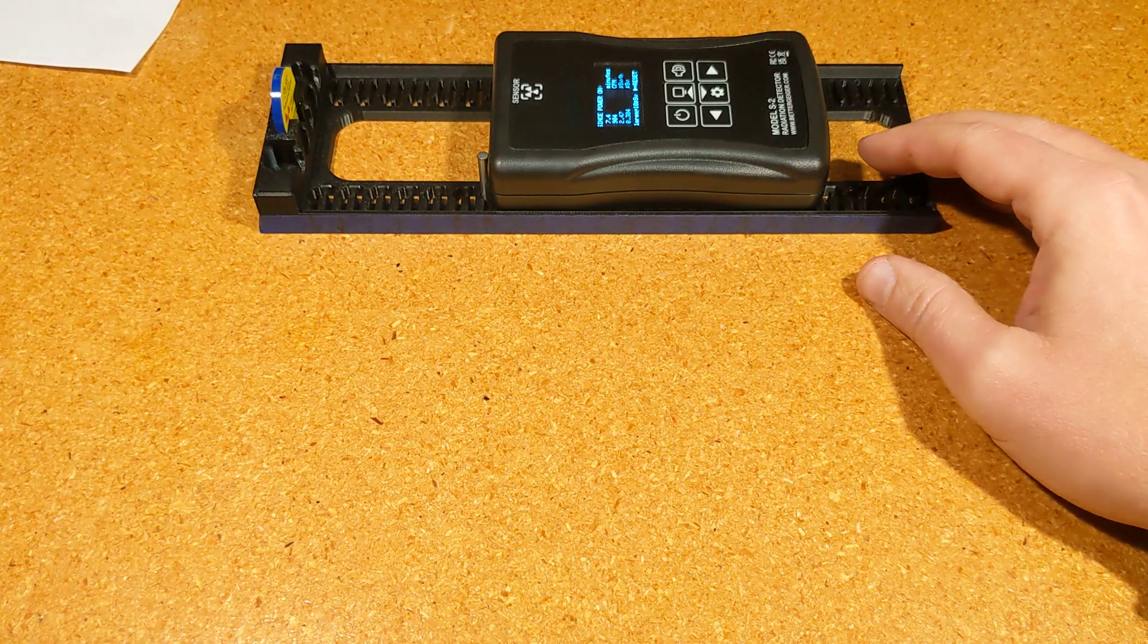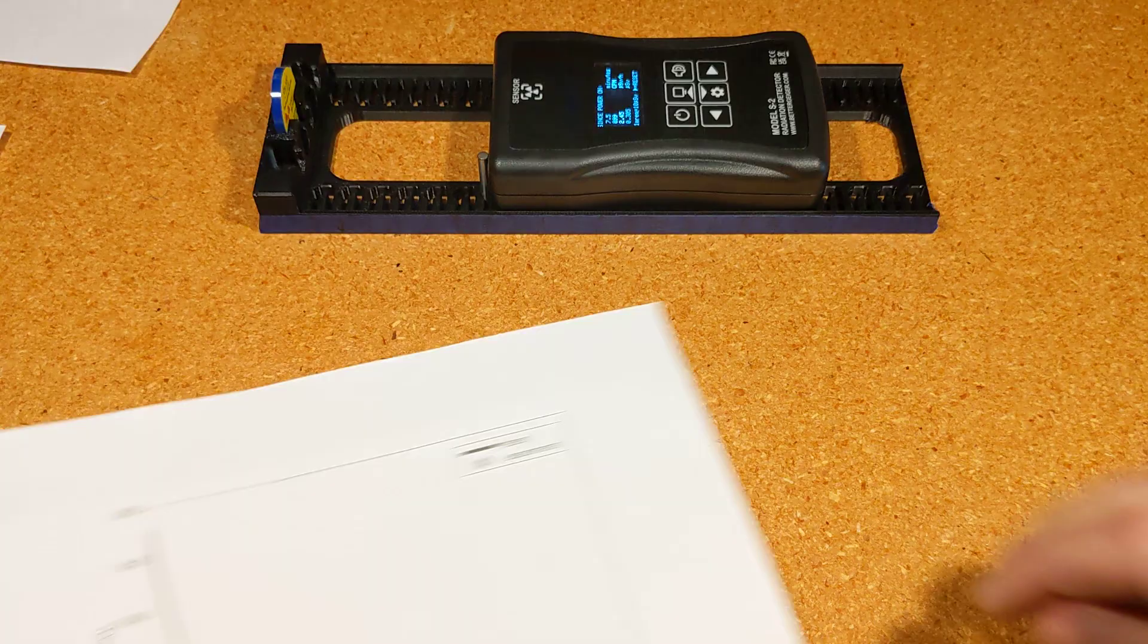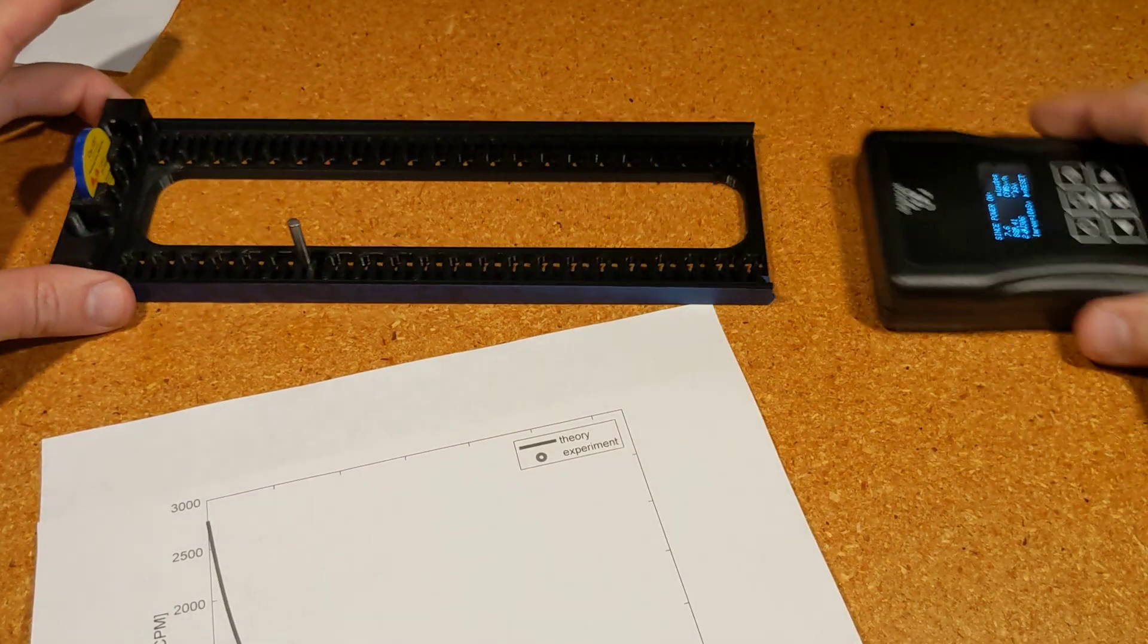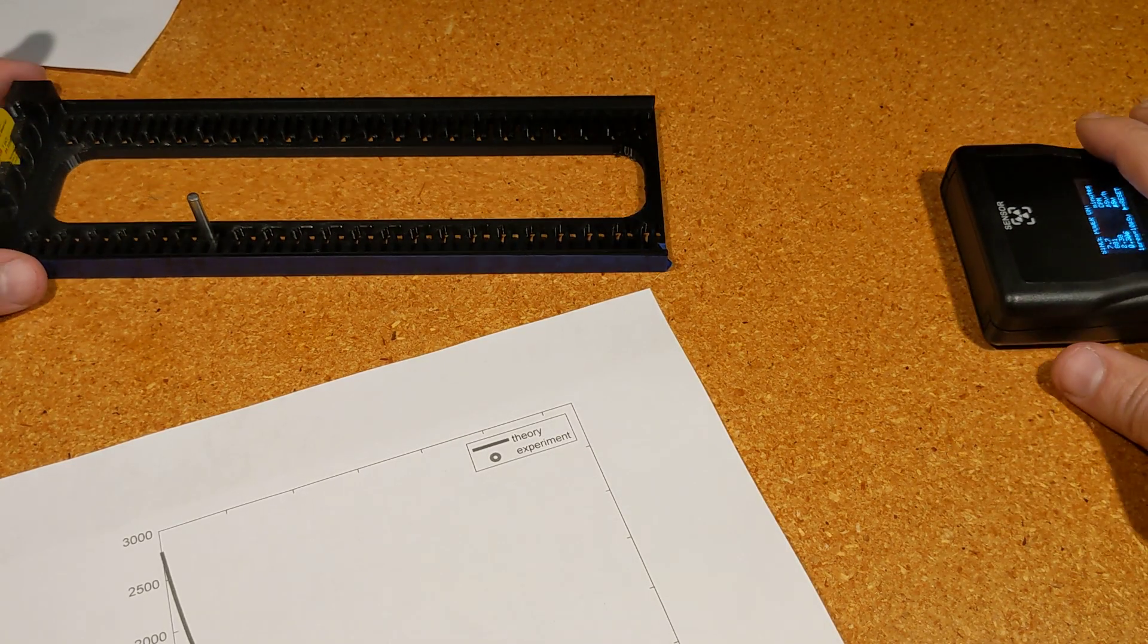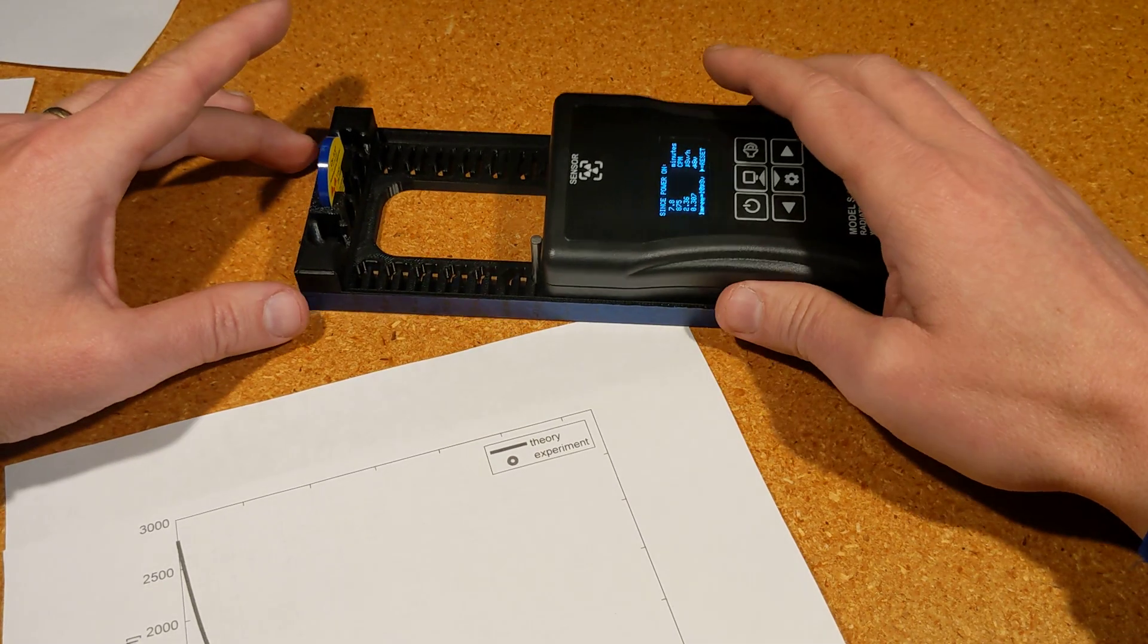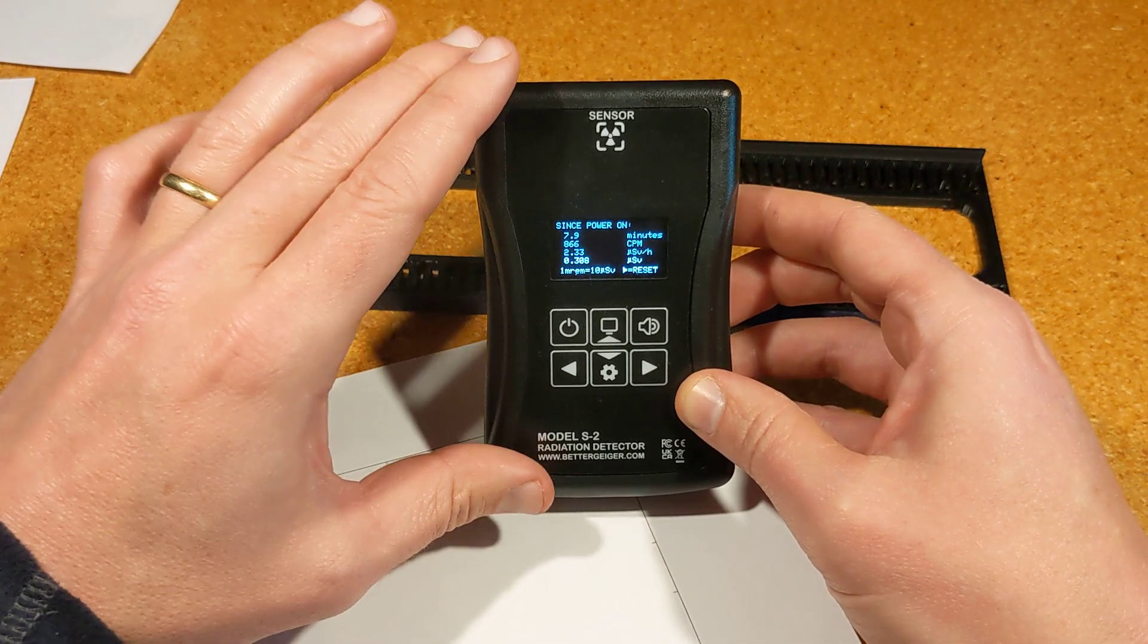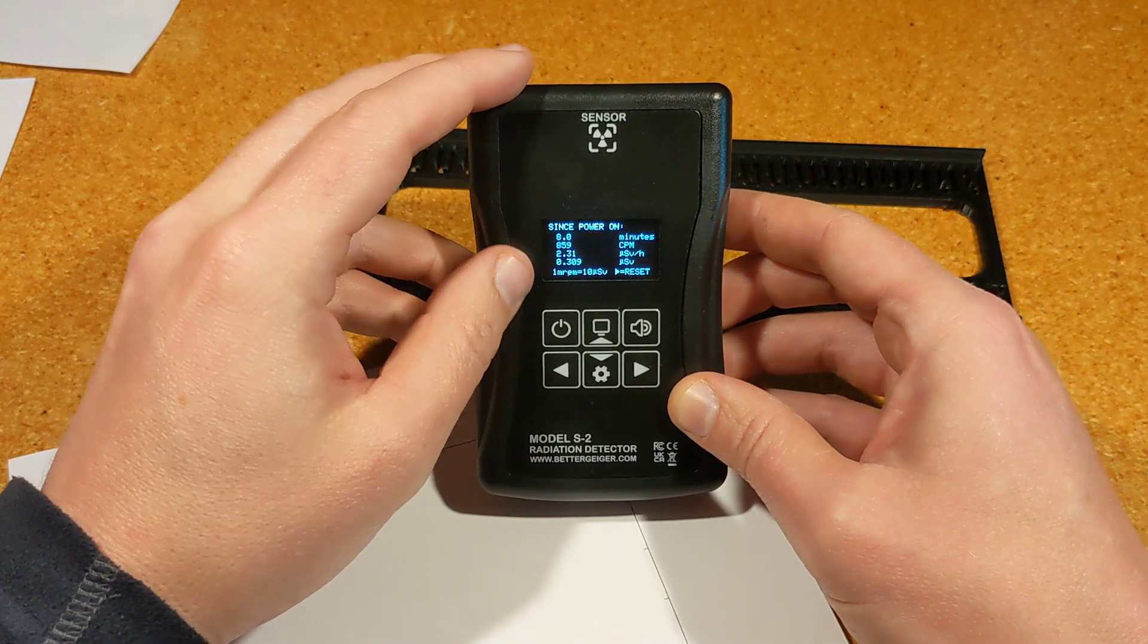If I were to show that on a curve here, which I've done in advance, you see the count rate in counts per minute and the distance. I forgot to mention I did one measurement where it was very far away so it was considered almost no influence of the source on the count rate, and I considered that my background reading, which is important because you always need to subtract background.